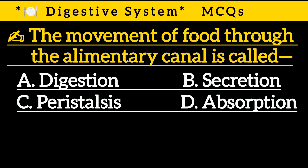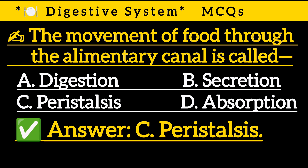Question 15: The movement of food through the alimentary canal is called — Option A: Digestion, Option B: Secretion, Option C: Peristalsis, Option D: Absorption. Correct answer is Option C: Peristalsis.